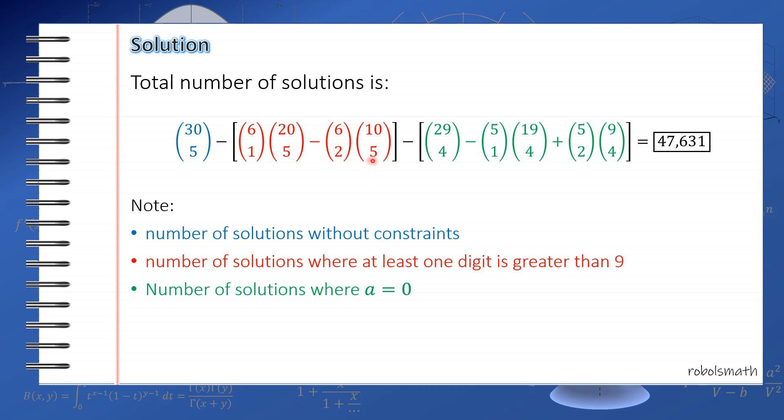So similarly, from that total, you subtract the case when there are only 5 variables. So that's 29 taken 4. So essentially, just reduce this by one. That's what you'll get. So that's the shortcut. So for example, if the sum is 20 and it's a 6 digit number, that's 25 taken 5 minus 6 taken 1 times 15 taken 5 minus 6 taken 2 times 5 taken 5. And then same for the other side. Okay, if you know that shortcut, this problem becomes quite mechanical.